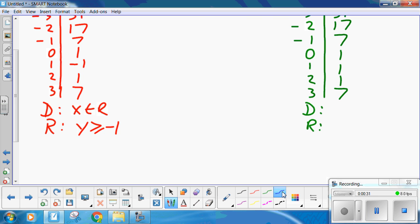X is all real. Y is greater than or equal to minus 1. Because this graph goes roughly like this. See, 0 is 1, 1 is minus 1.